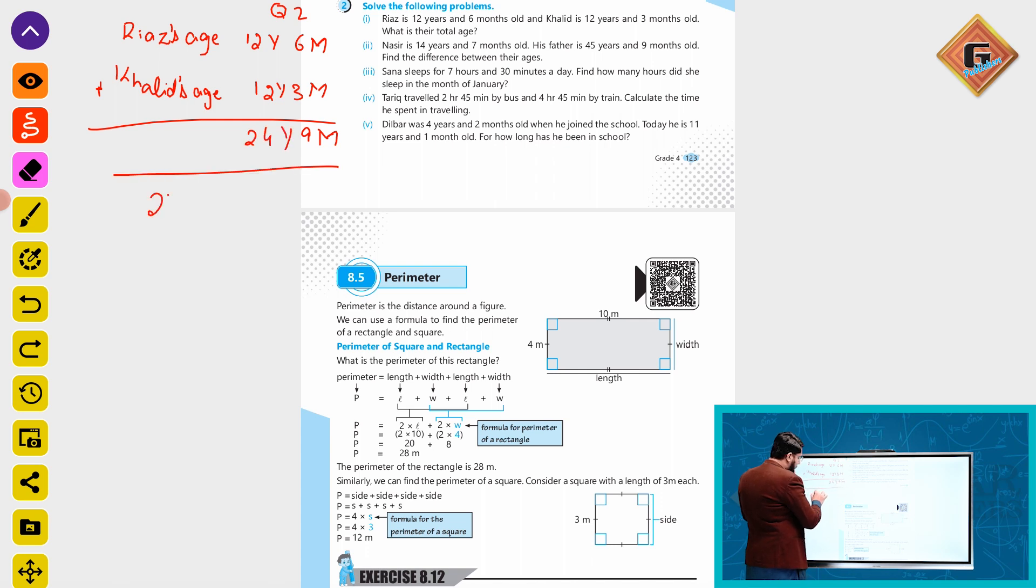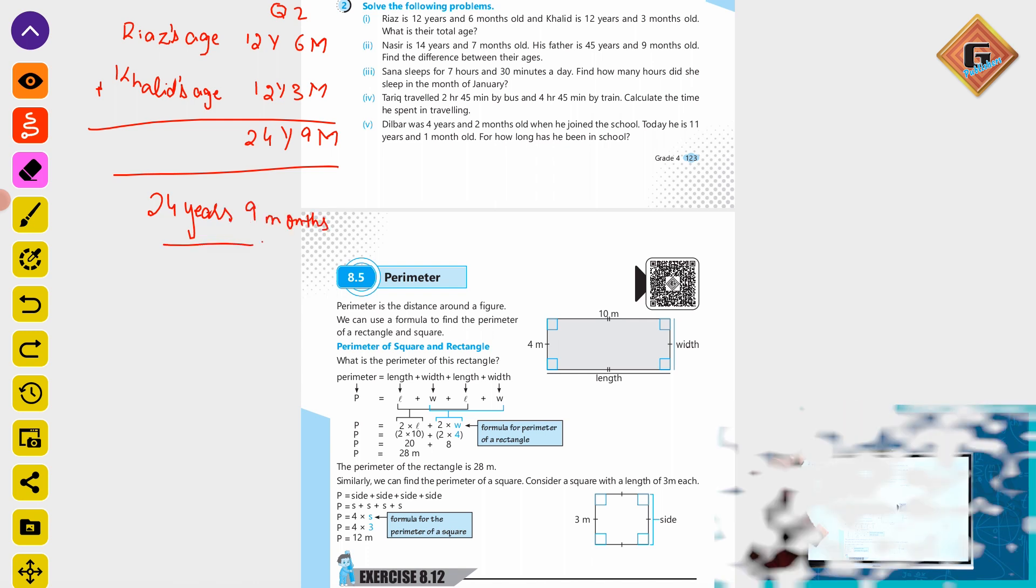So the collective age is how much? 24 years and 9 months. This is the total age.